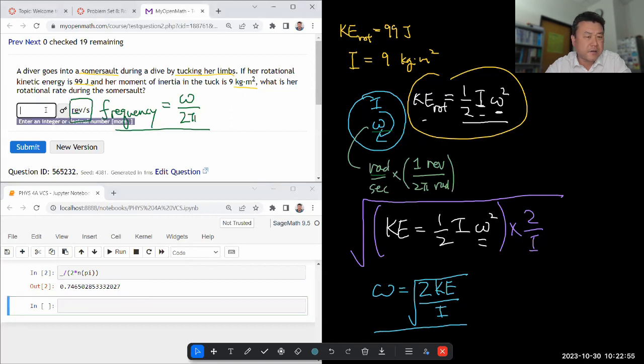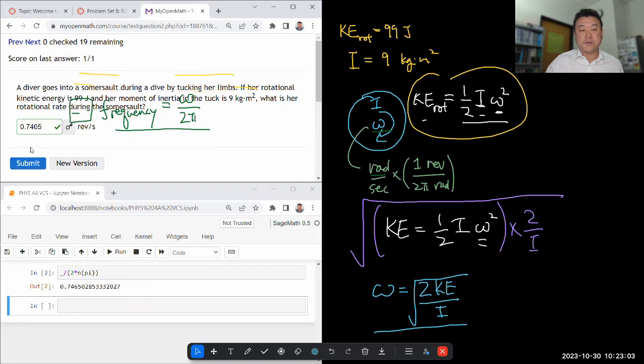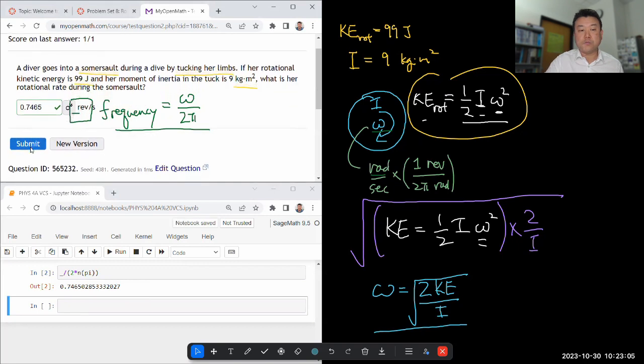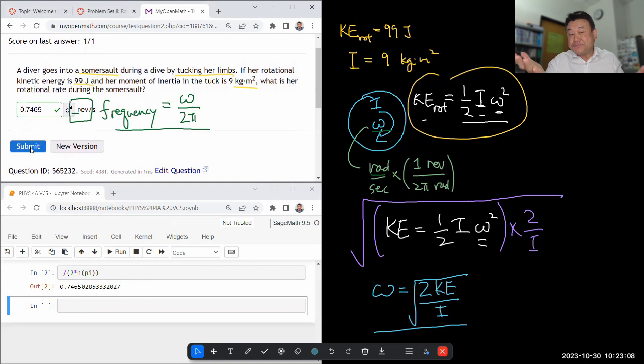So that will give me 0.746 revolutions per second. Maybe that's right. It feels a little slow, but I'm not a professional diver. So I don't know if less than one revolution per second is correct or not. That's the answer we get.